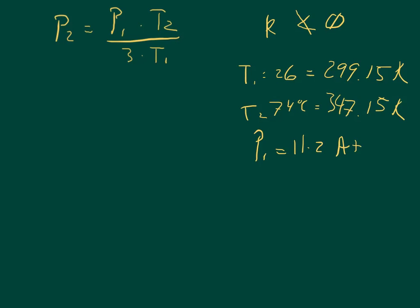And so if I take the P1 and multiply it by the 347.15, it's P1 times T2. So I take my P1 times my T2, and what I get is 3888.08. And I got to divide that by the 3, so T1 times 3. So that equals 897.45.